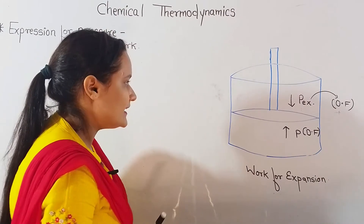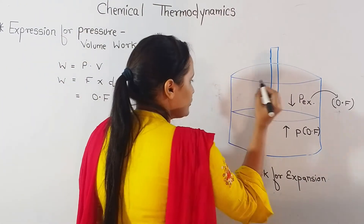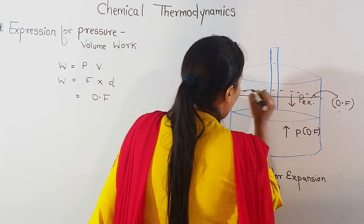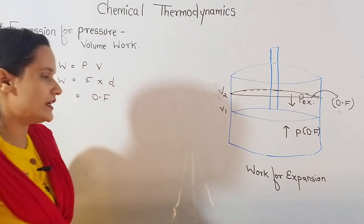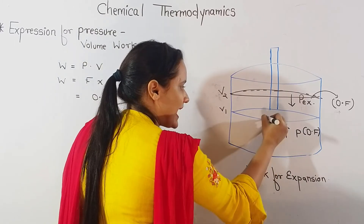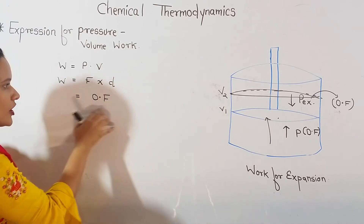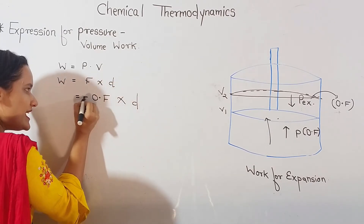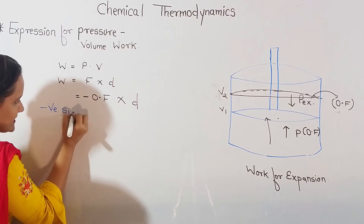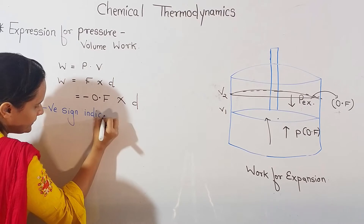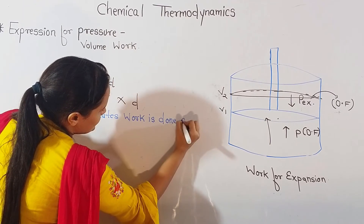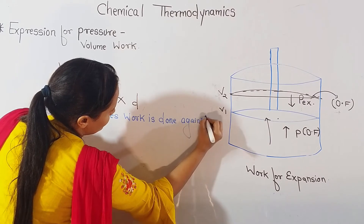Now what will happen: I will slightly increase my internal pressure. So my piston position, which was V1, will move slowly to V2. When my internal pressure is increased, my driving force is increasing. But I have written the formula for opposing force — force into displacement — so this is why I am putting a negative sign here. The negative sign indicates work is done against the opposing force.